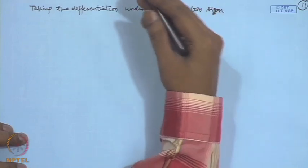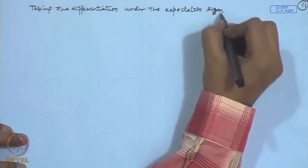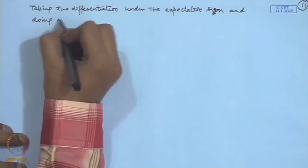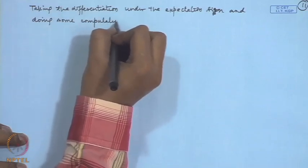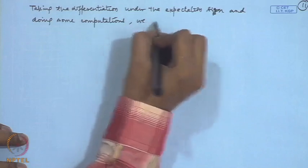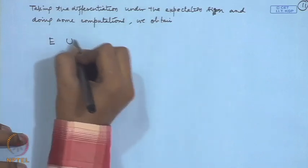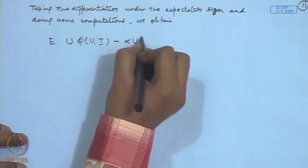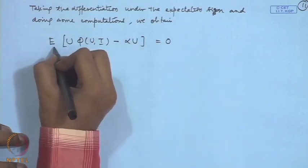And then what we do, we carry out a little bit of calculation. Doing some computations we obtain expectation of u*phi(u,t) minus alpha*u is equal to 0.